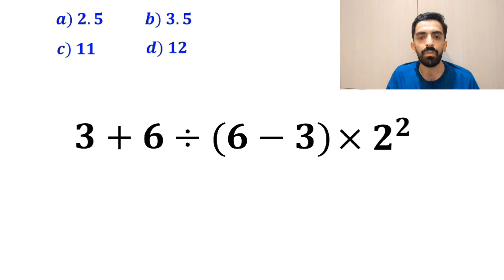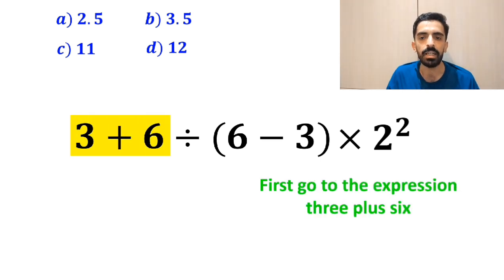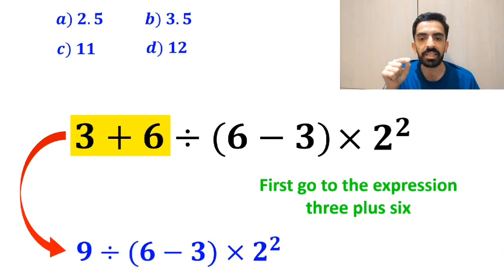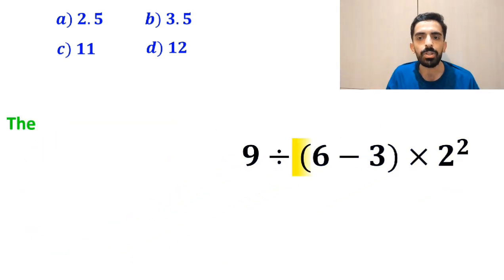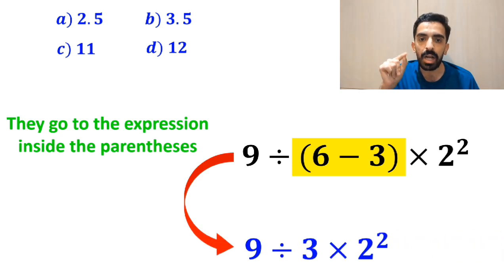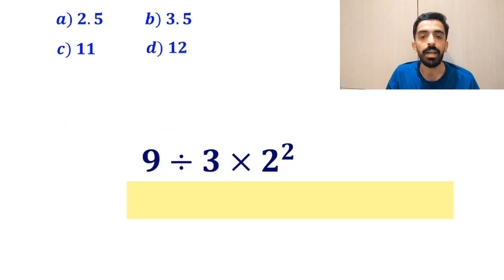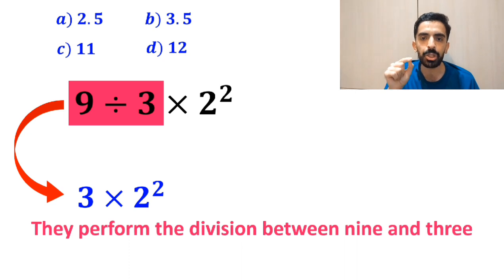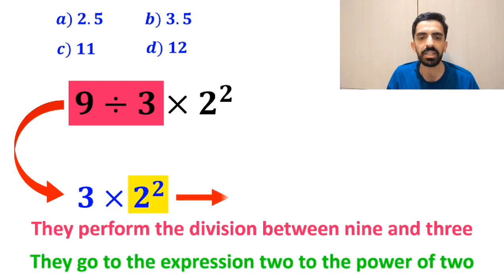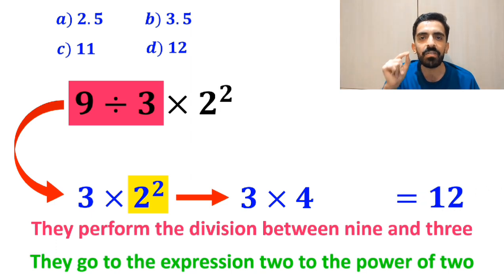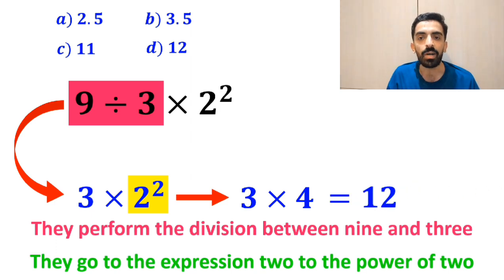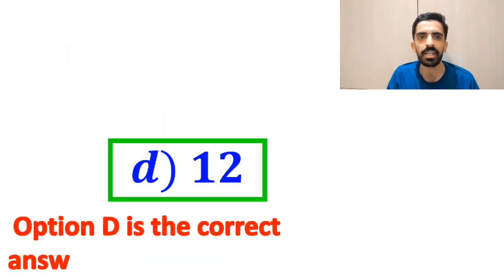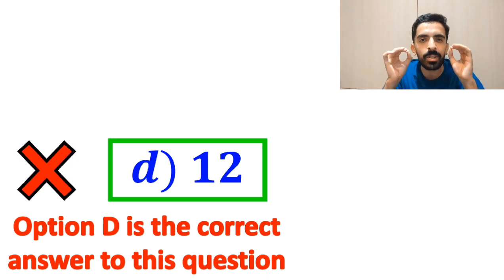Many people, to solve this question, first go to the expression 3 plus 6, and instead of this expression, they write 9 divided by 6 minus 3 inside the parenthesis, then times 2 to the power of 2. In the next step, they go to the expression inside the parenthesis and simplify this expression to 9 divided by 3 times 2 to the power of 2. Then they perform the division between 9 and 3, writing 3 times 2 to the power of 2. In the final step, they simplify 2 to the power of 2 to get 3 multiplied by 4, which gives them the answer 12. Without any hesitation, they quickly say that option D is the correct answer — but this answer is absolutely wrong.